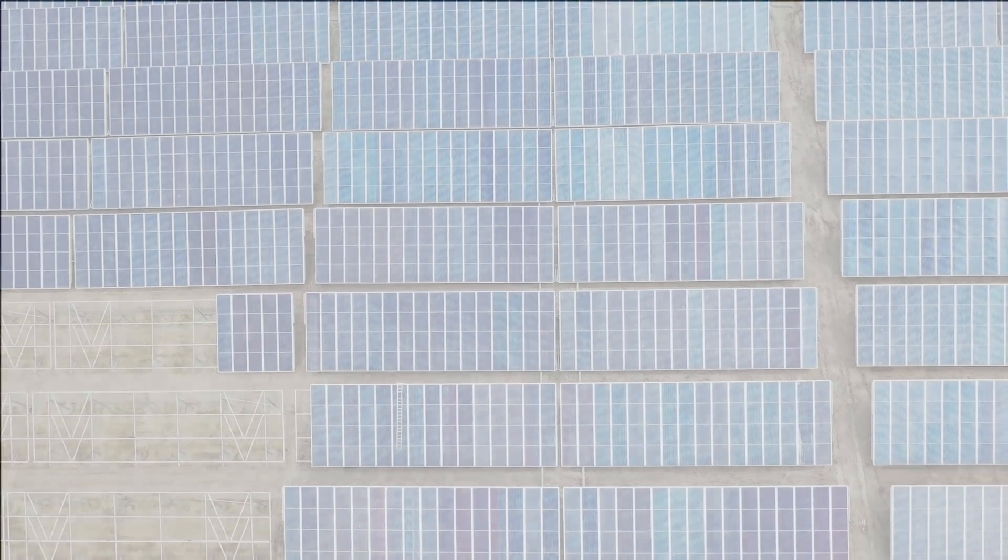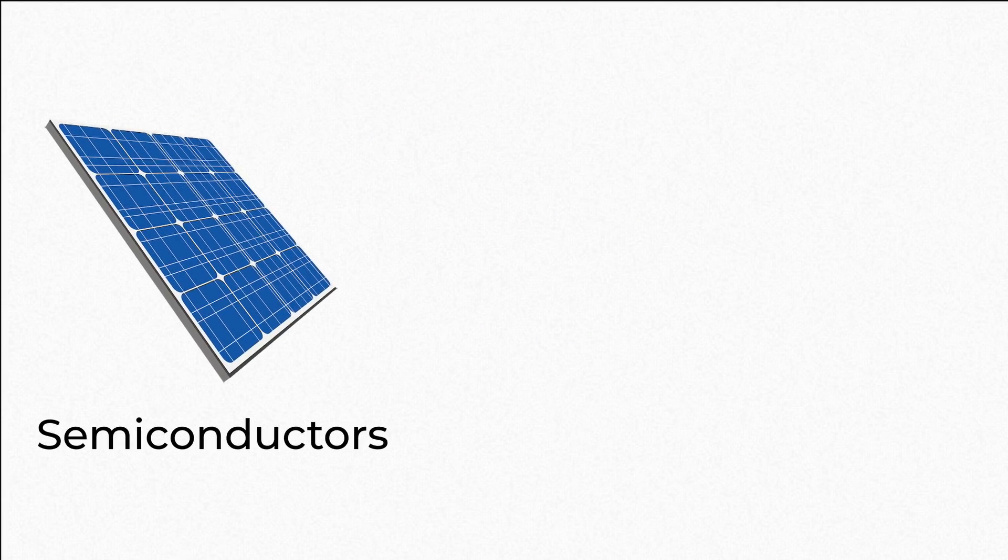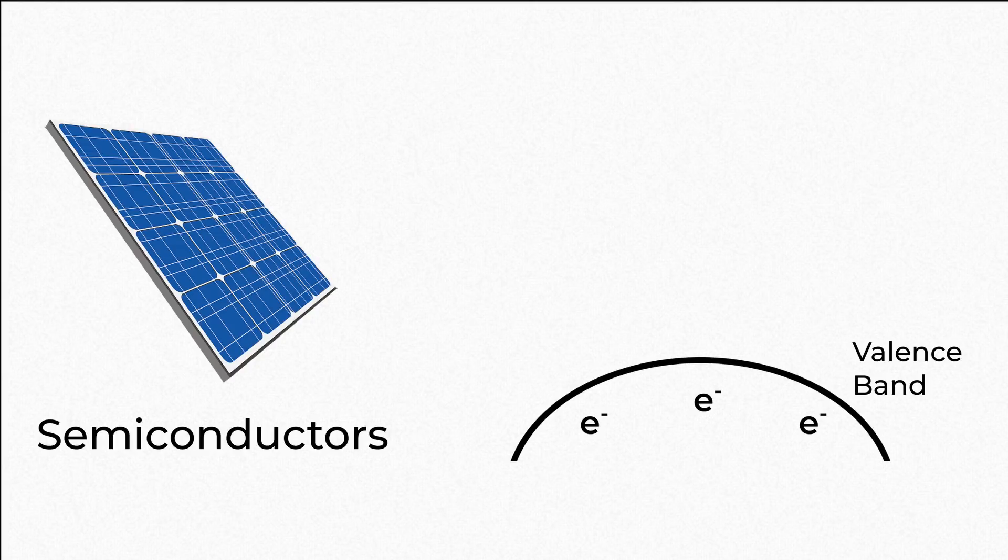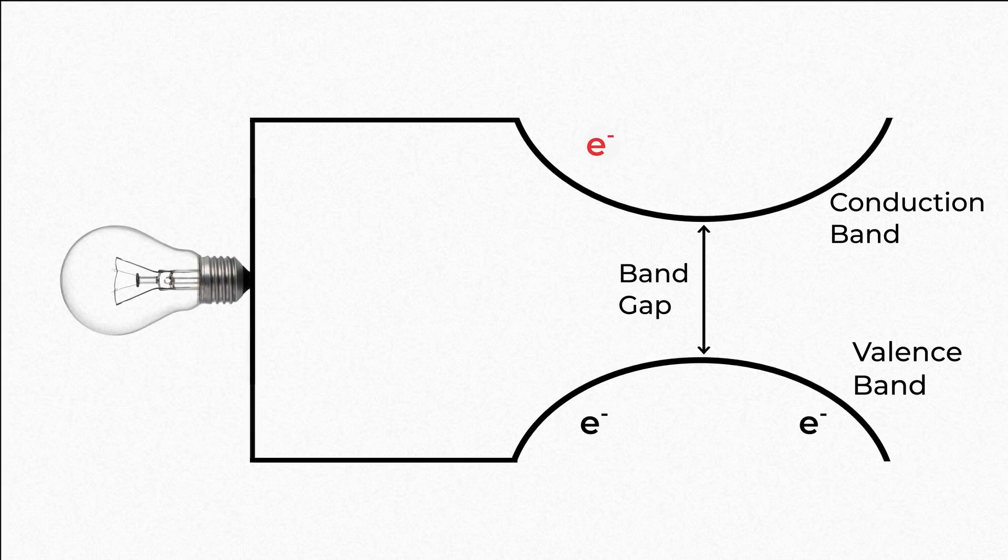But before discussing these, we have to quickly explain some basic solar cell physics. Solar cells are made from a class of materials called semiconductors. In a semiconductor, the electrons sit within a region called the valence band. When particles of light called photons enter the solar cell, some of these electrons can use this energy to jump up to a region called the conduction band. The gap between these two regions is called the band gap and is very important for the solar cell's efficiency. Once an electron is in the conduction band, it is free to move and do work on a circuit, providing energy.